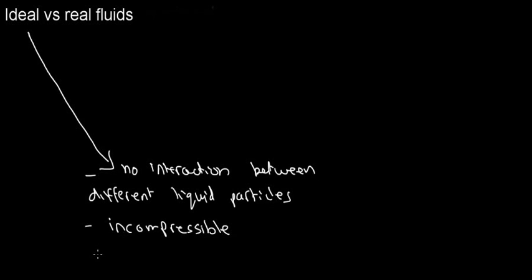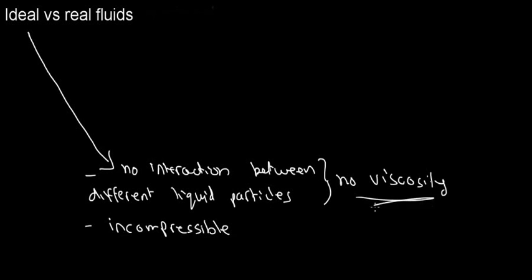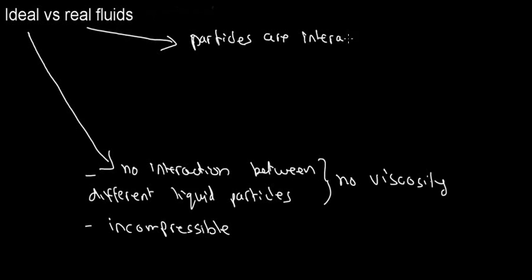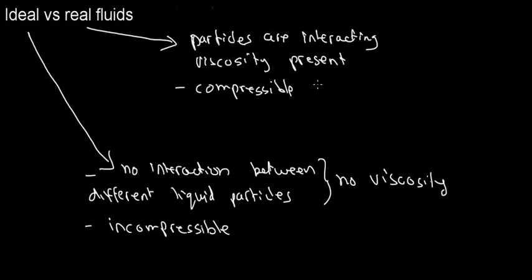Because there are no particle interactions in an ideal fluid, there is no viscosity. Viscosity is the resistance of a fluid to move or migrate from one point to another due to friction between particles. Real fluids are the opposite: particles interact, so there is viscosity — the fluid is viscous — and real fluids are also somewhat compressible to a certain extent.